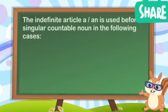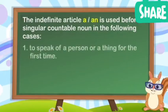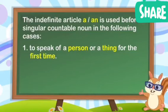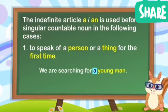The indefinite article A and AN is used before a singular countable noun in the following cases: to speak of a person or a thing for the first time. For example, we are searching for a young man.